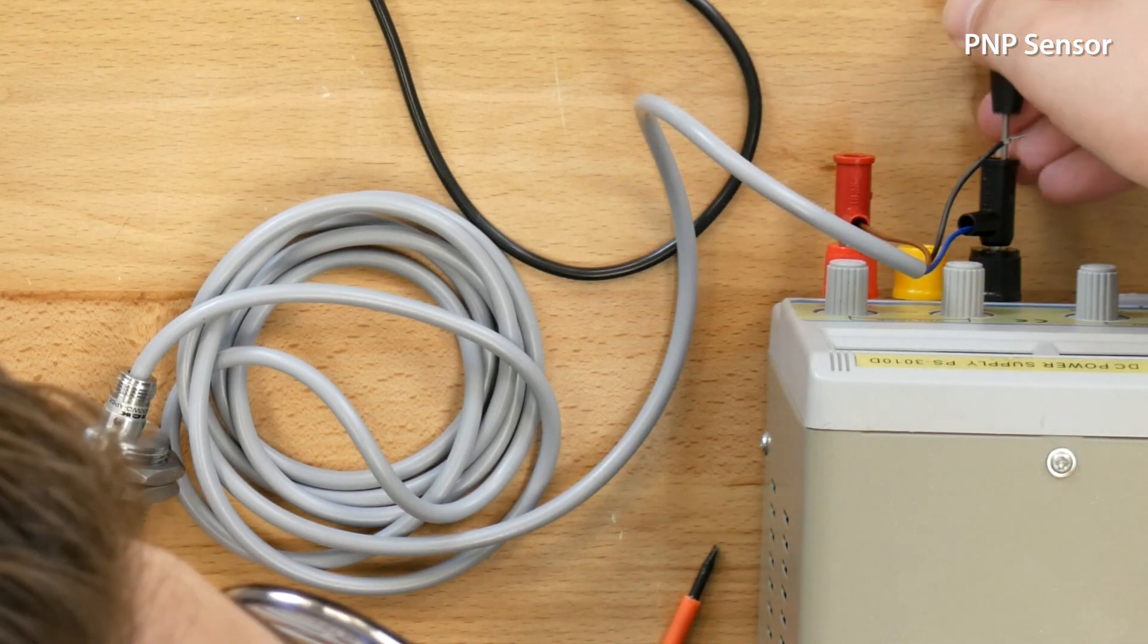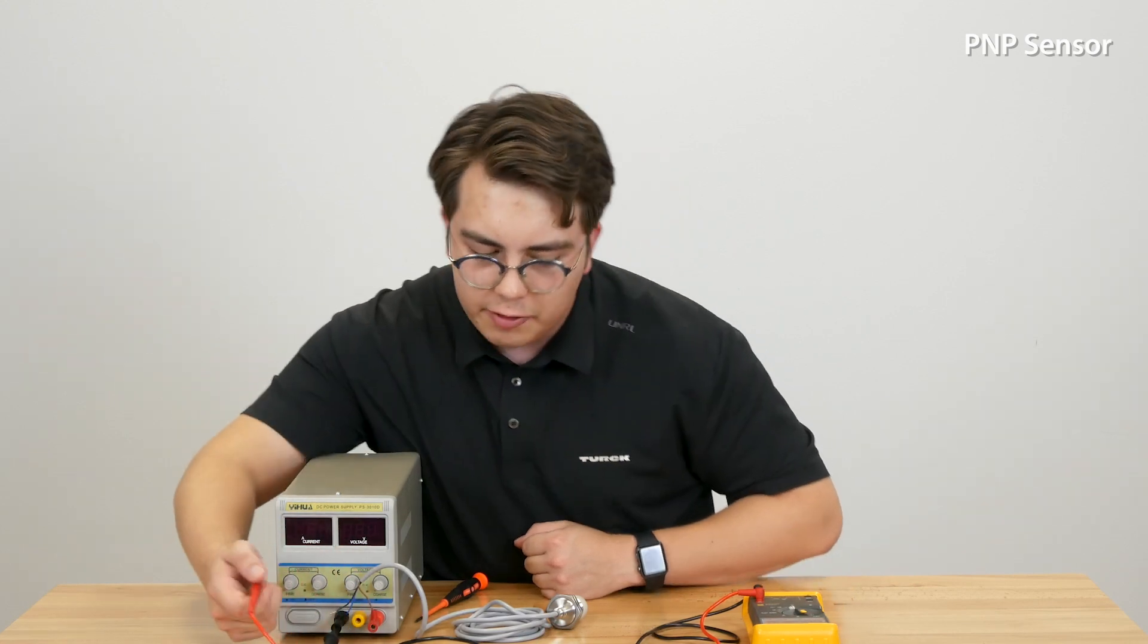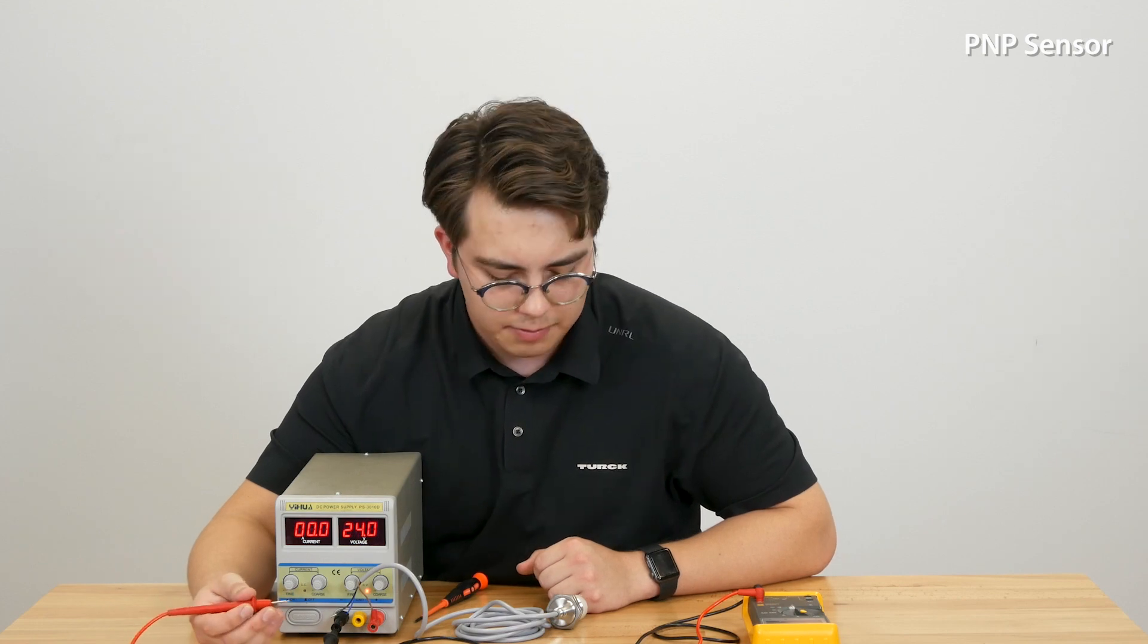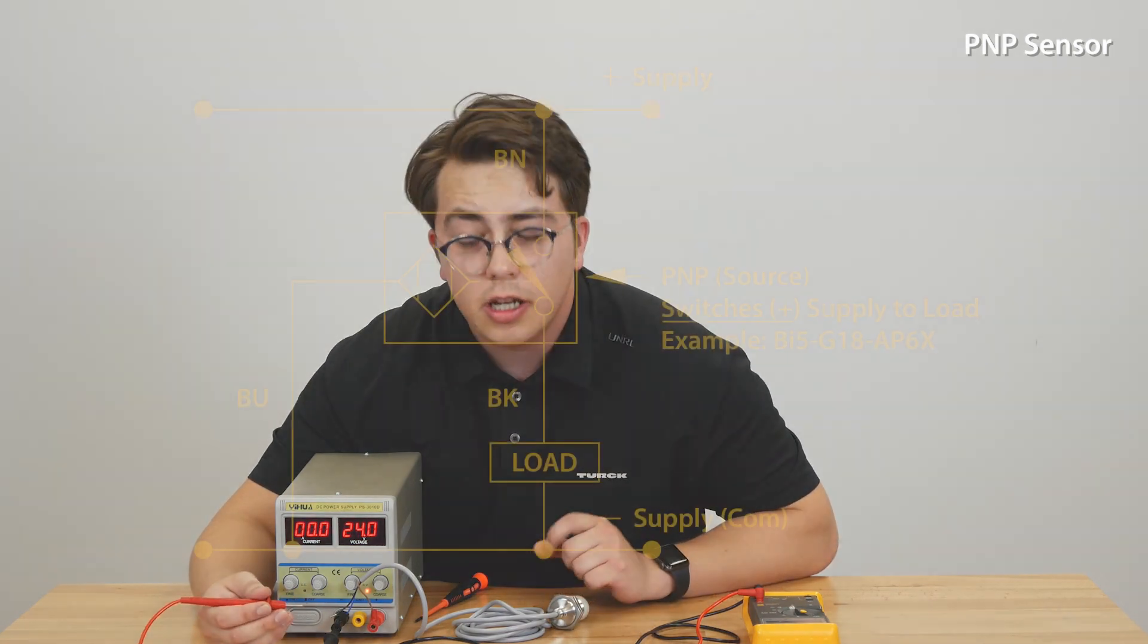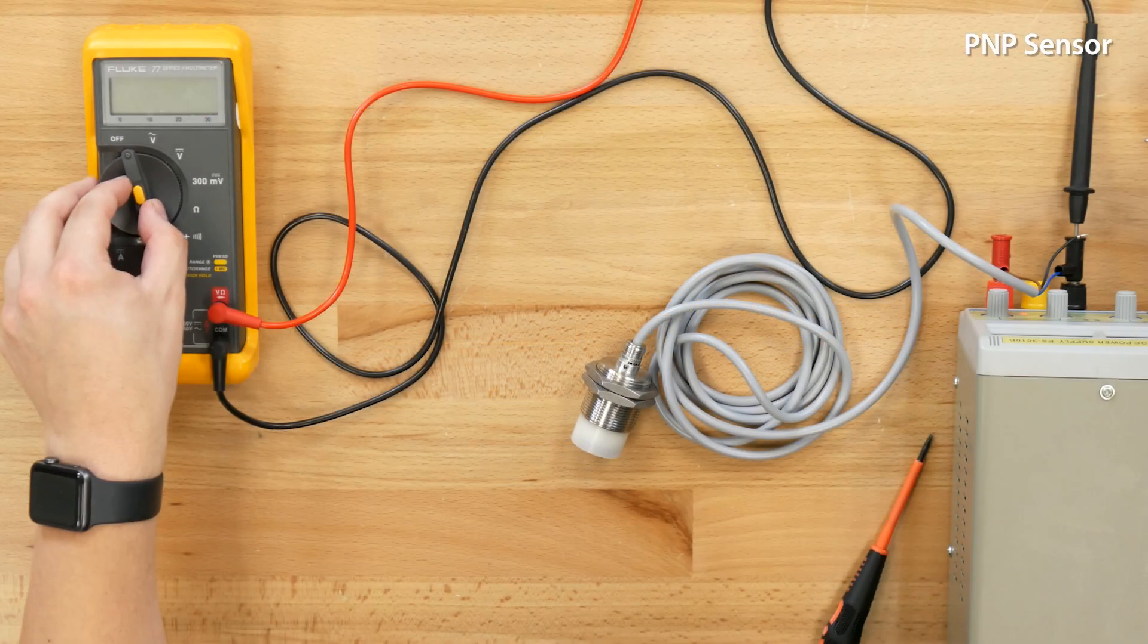We will hook our probe from our multimeter into the negative of our power supply and we'll take our positive probe here. We can turn on our power supply providing power to the sensor and because PNP signals are tied to ground you don't have to worry about the resistor in this case. So we can turn on our multimeter.